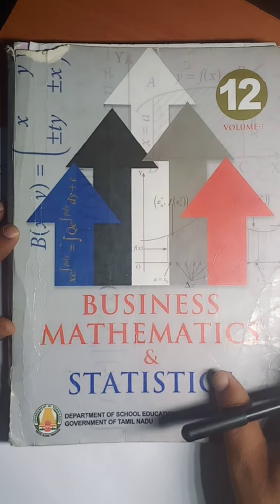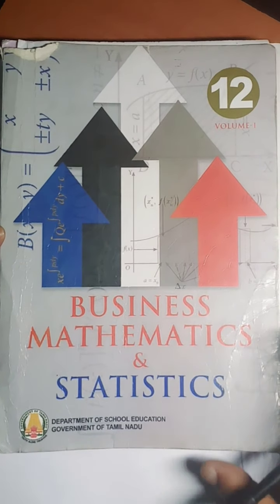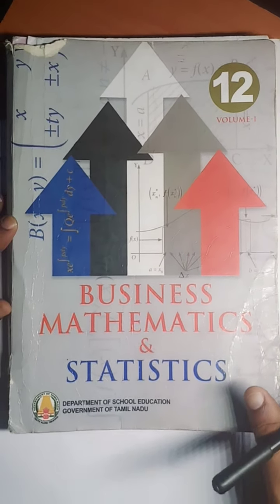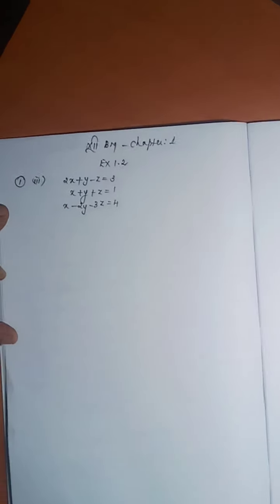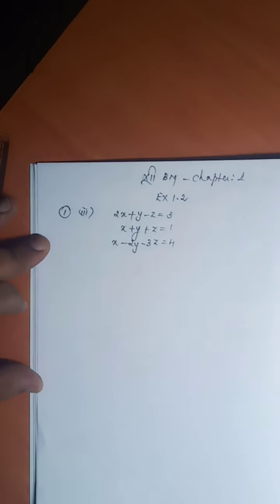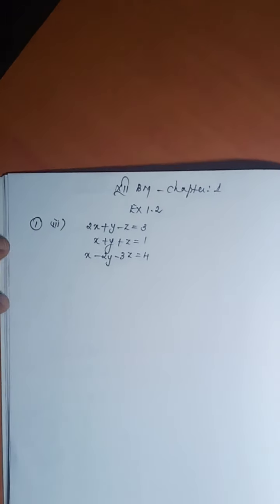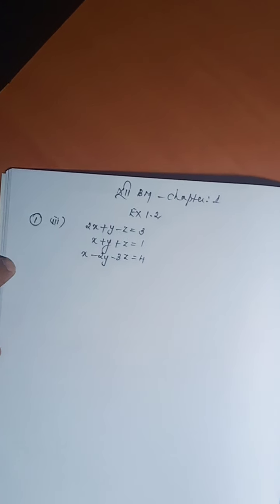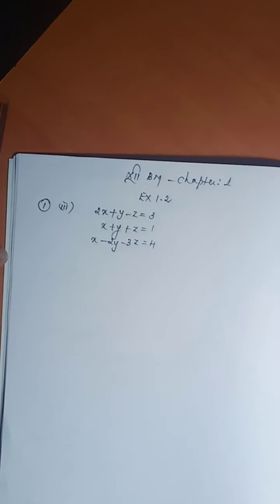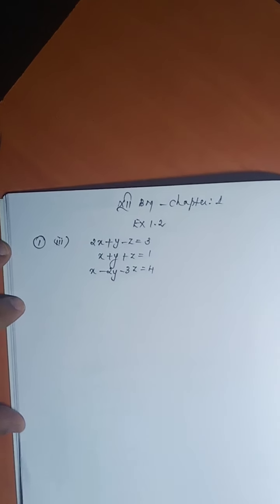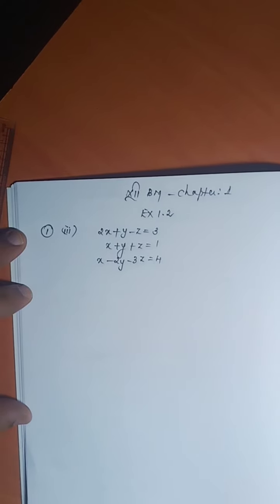Hi children, this is Sri Bukumar, 12th Standard Business Mathematics and Statistics. Now continuation of exercise 1.2. Already I completed problem number 1, sub-question 1 and 2. Now sub-question number 3.